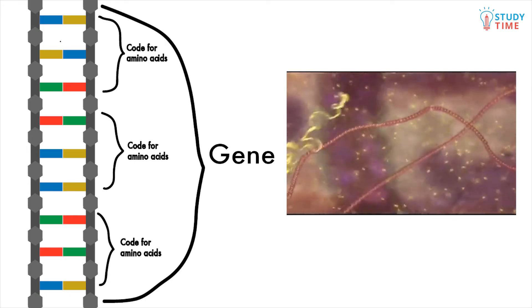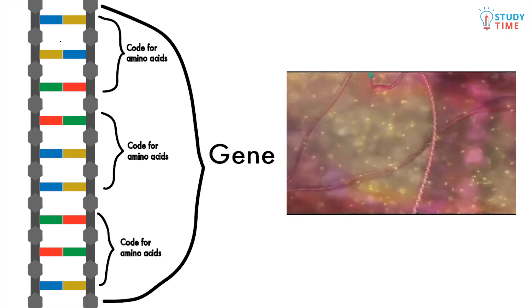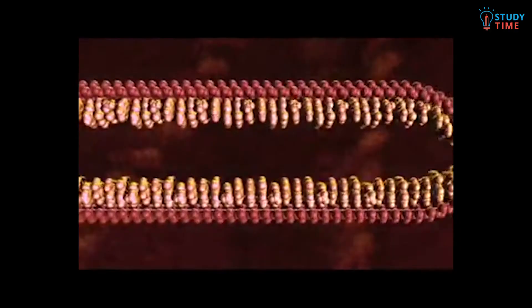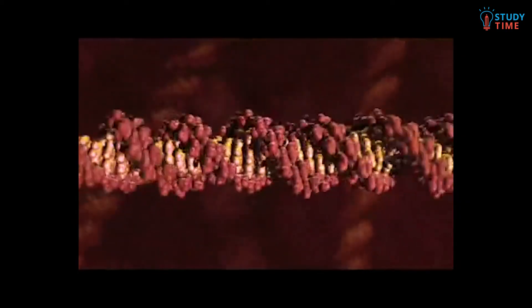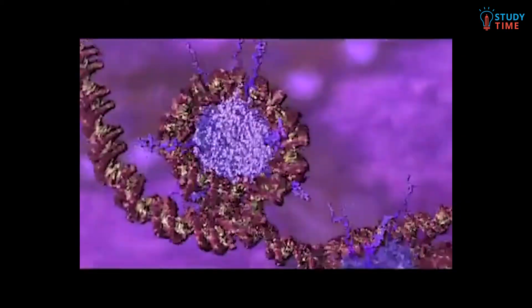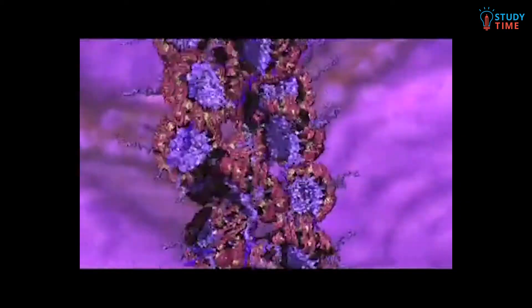The long strands of DNA twist to form a double helix and coil up to form chromosomes. Different species have different amounts of chromosomes. Chromosomes come in pairs, and so every individual has two forms of the same genes, one from each parent.